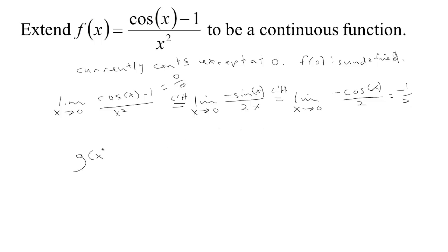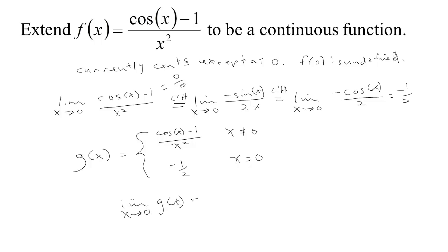So we'll make a new function based on the old one: when x isn't zero we'll let it be what it used to be, but when x is zero we'll make the function be negative one half. This is continuous everywhere except zero so we're fine there. The only issue is continuity at zero, but the limit as x tends to zero of g of x is negative one half, and we defined negative one half to be the value of g at zero. So as x approaches zero, the values that come out of g of x get closer and closer to the actual value of g at zero — so it's continuous at zero too, and this is now continuous everywhere.